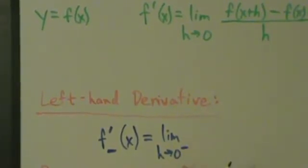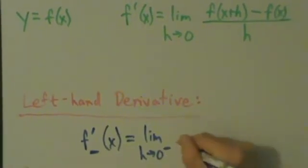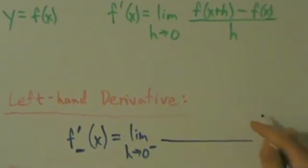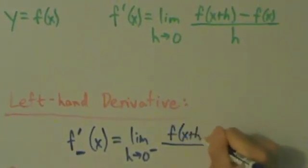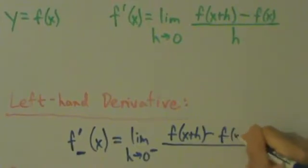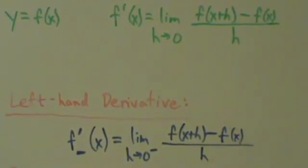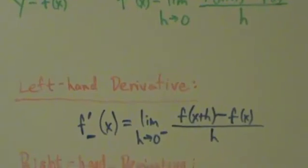Remember this notation for one-sided limits. This is the limit as h approaches zero from the left, from the negative direction. This part is actually still the same. The difference quotient is the same: f of x plus h minus f of x all divided by h. So that's a left-hand derivative.